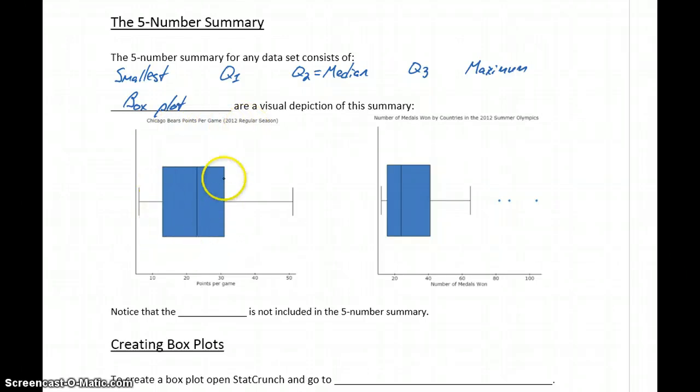What we have is this box with a couple of lines sticking off in either direction. This box represents our three quartiles. The left end of that box is Q1, the right end is Q3, and then that middle bar dividing the box is Q2, which is again the median.